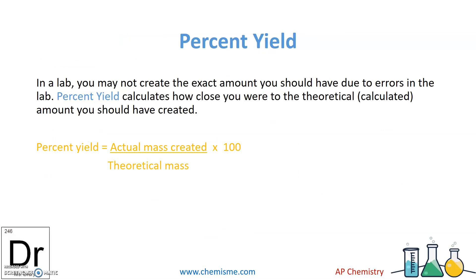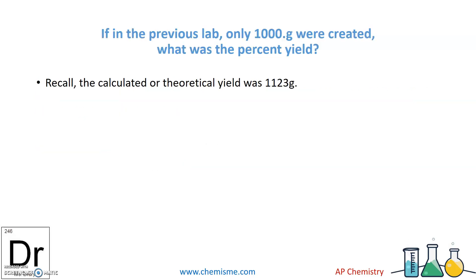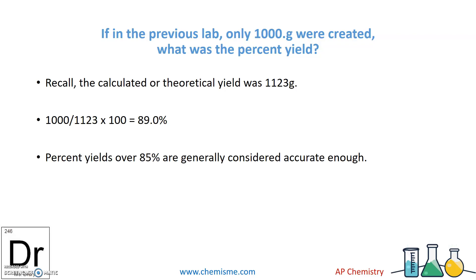Percent yield tells you how accurate you are. In a lab, you won't necessarily create the exact theoretical amount due to errors. Percent yield calculates how close you were to your theoretical value. It's simple: write your actual mass from the lab on top, divide by the theoretical calculated amount, and multiply by 100. If theoretical yield was 1,123 grams and in the lab only 1,000 grams were created, that's 1000 divided by 1123 times 100 equals 89%. Percent yields over 85% are generally considered accurate enough.